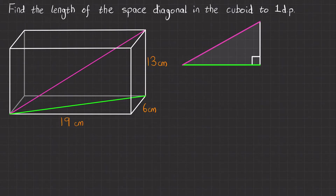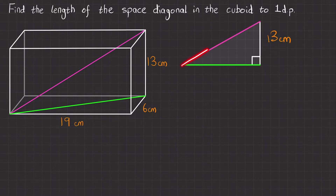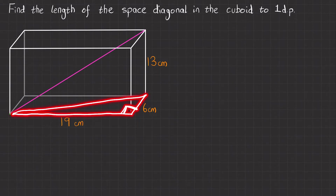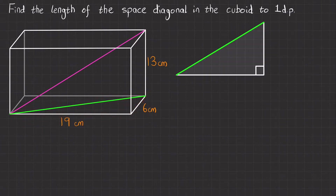Now we've got one of the lengths — this side length here, which is 13 centimetres — but we haven't got this green length or this pink length. So in order to find the pink length, we're going to need to find the green length first. To find the green length, we need to look at another face of the shape. Looking at this green length, if it goes down and across again, we've actually got another right-angle triangle, so let's draw that one out.